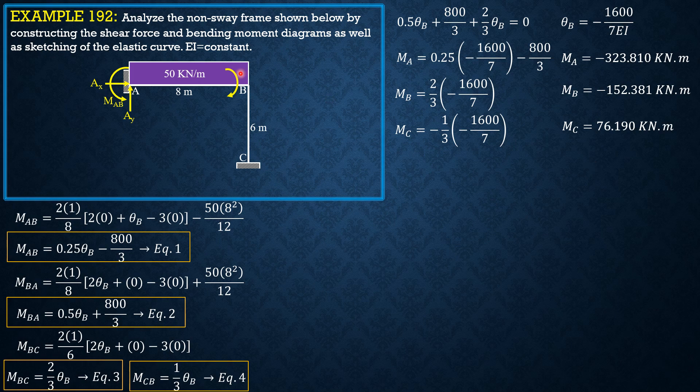So from there, let's have the moment at BA, which is positive 152.382. By slope deflection equation, it is clockwise.